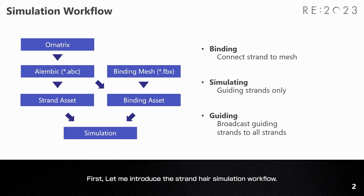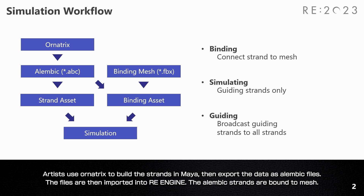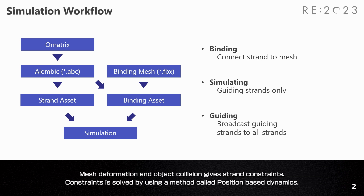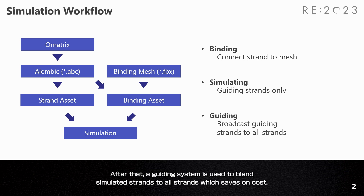First, let me introduce the strand hair simulation workflow. Artists use Ornatrix to build the strands in Maya, then export the data as Alembic files. The files are then imported to RE engine. The Alembic strands are bound to mesh. Mesh deformation and object collision give strand constraints. The constraint is solved by using a method called position-based dynamics. After that, a guiding system is used to blend simulated strands to all strands, which saves on cost.